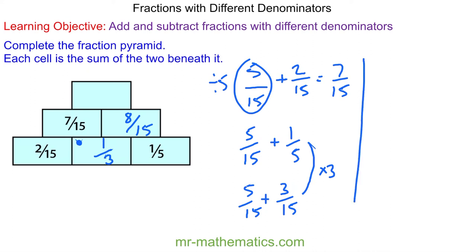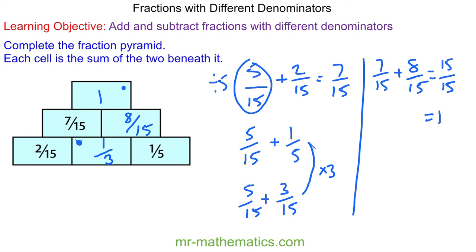Finally, this value is seven fifteenths add eight fifteenths. Seven add eight is fifteen, divided by fifteen is one. Thank you for watching, and I hope you found that useful. Thanks again and take care.